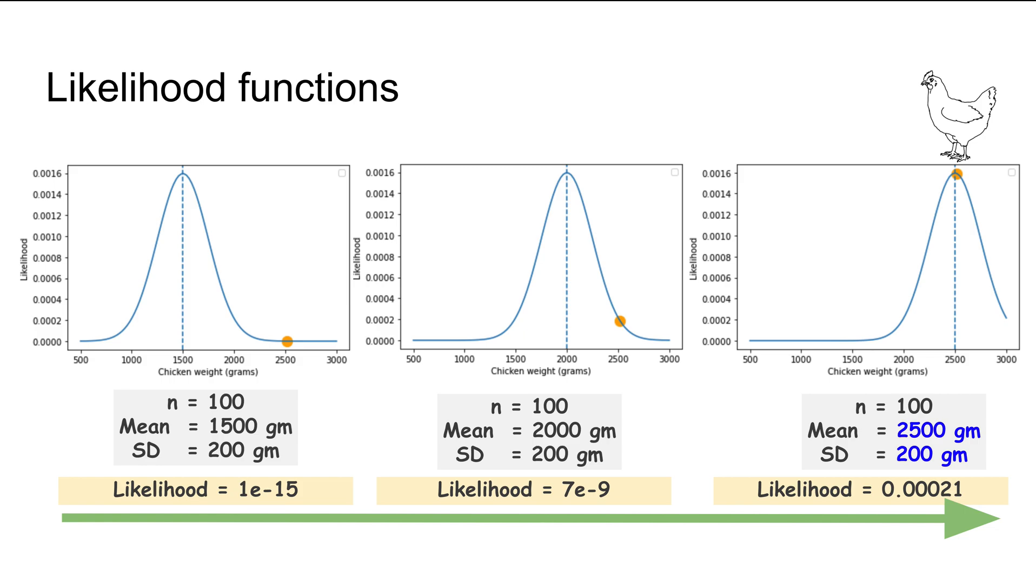If we pose a question as to which population this data point of 2500 grams came from, we can look through these three likelihood functions. We can vary the mean or standard deviation or both to get the value for maximum likelihood. As we go from left to right, on the rightmost side, when the mean of that particular distribution equals 2500 grams, that's when the likelihood is the highest. Therefore, we could say this data point came from a population with a distribution similar to the one shown on the rightmost plot.